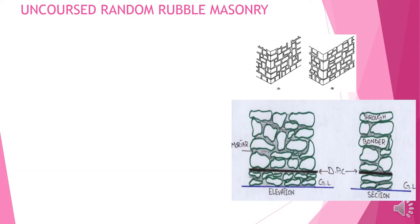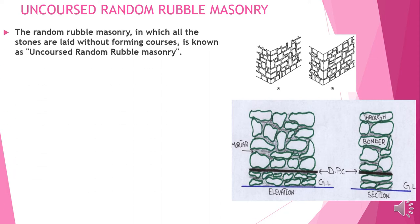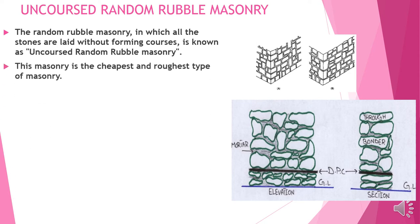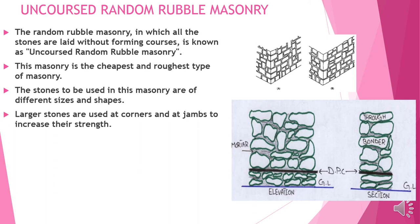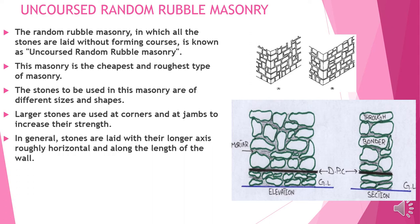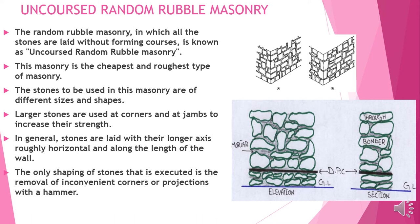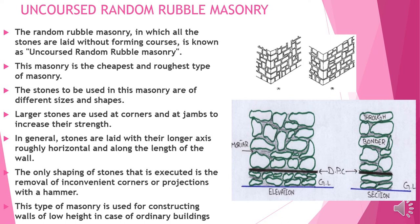These images show uncoarse rubble masonry in elevation with DPC; the bonder is at the top and the thorough is visible. The random rubble masonry in which all stones are laid without forming courses is known as uncoarse random rubble masonry — the cheapest and roughest type. Stones are of different sizes and shapes; longer stones are used at corners and jams. Stones are laid with the longer axis roughly horizontal, with only inconvenient corners or projections removed by hammer. This masonry is used for constructing walls of low height.